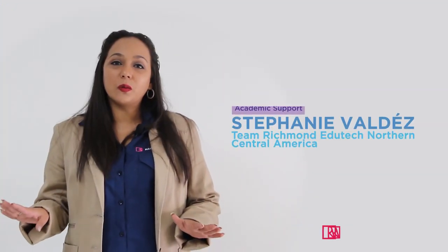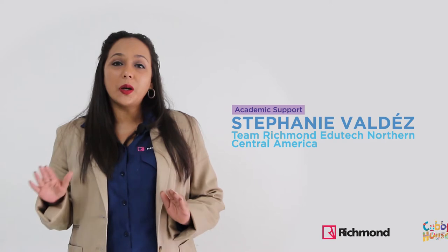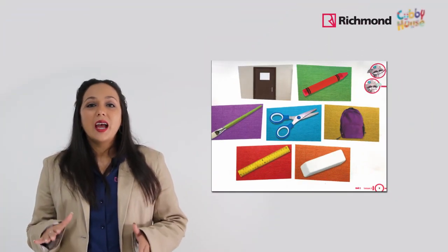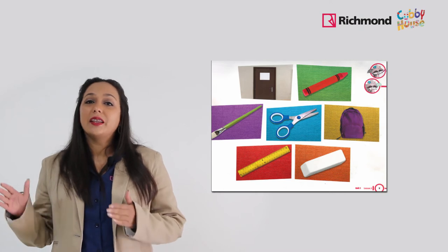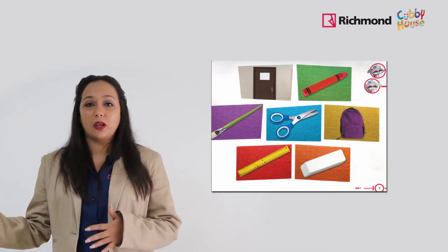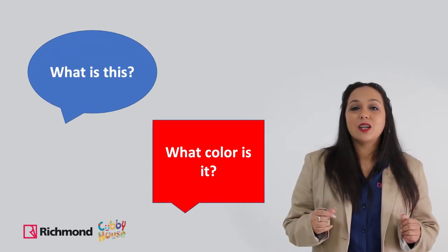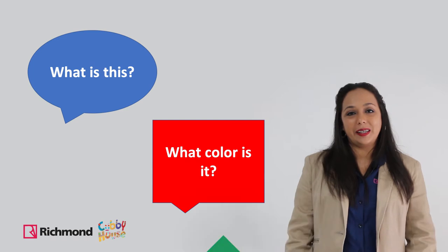In this video we will continue going through our lesson plan. By now, students can practice identifying the key vocabulary through different activities. In this part of the lesson, the teacher asks students 'What is this?' and 'What color is it?'